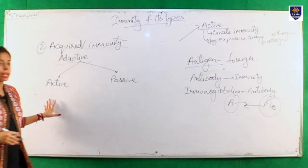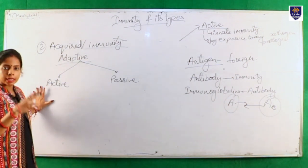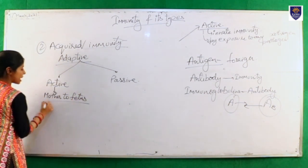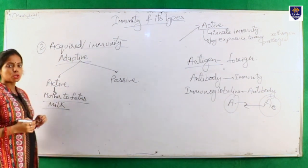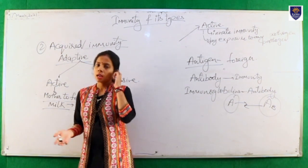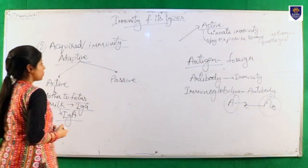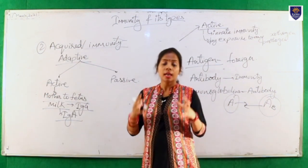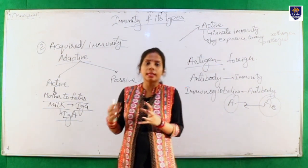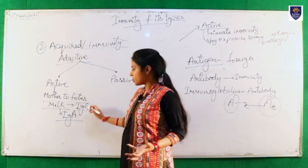Now, back to adaptive immunity. There are two types: active and passive. Active acquired immunity is when we get immunity from an outside source directly. For example, a mother provides immunity to the fetus — IgG antibodies are transferred from mother to fetus through the placenta, and IgA antibodies are transferred through milk. That type of immunity is known as active adaptive immunity, because it comes from outside the body.